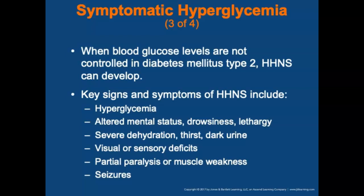When blood sugar levels are not controlled in type 2 diabetes, a condition known as hyperosmolar hyperglycemic non-ketotic syndrome, or HHNS, can develop. Key signs and symptoms of HHNS include hyperglycemia, altered mental status, drowsiness or lethargy, severe dehydration, thirst, dark urine, visual or sensory deficits, partial paralysis or muscle weakness, and often seizures.